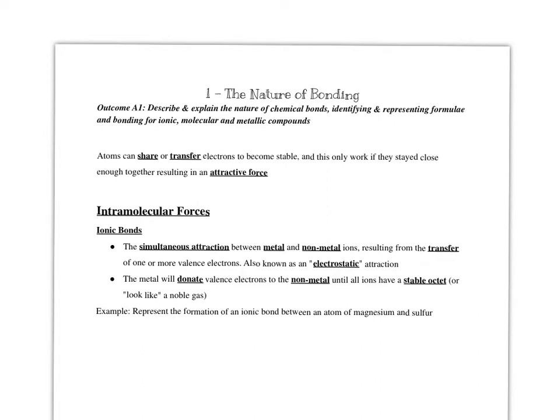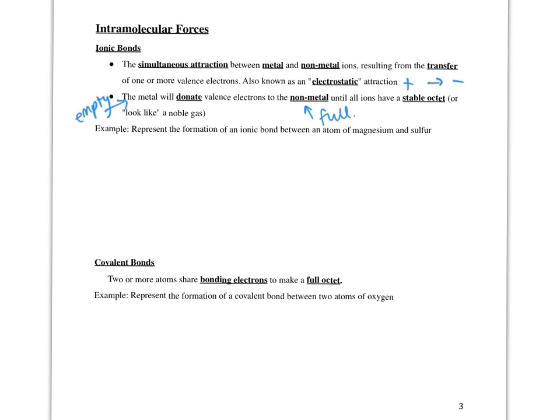Ionic bonds are formed by the simultaneous attraction between a metal and a non-metal ion. This is from the transfer of one or more valence electrons to make an ion. This is also known as an electrostatic attraction - a positive is attracted to a negative. A metal atom donates valence electrons to a non-metal atom until all ions have a stable octet.